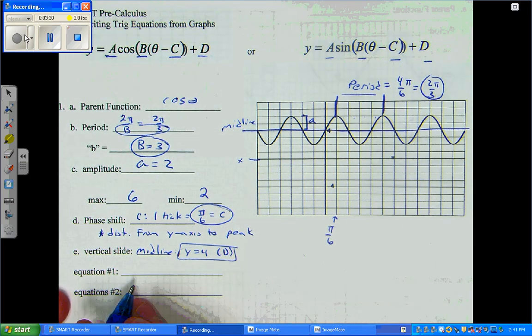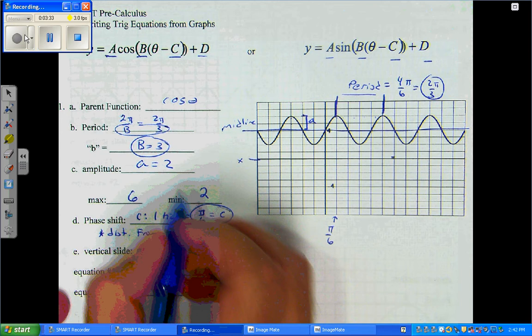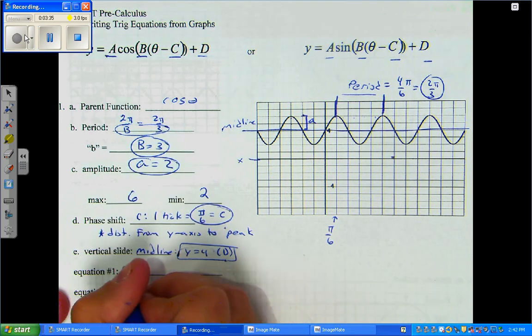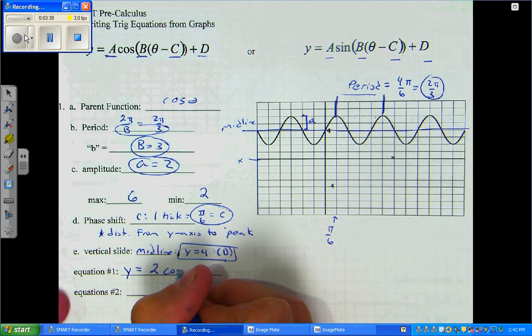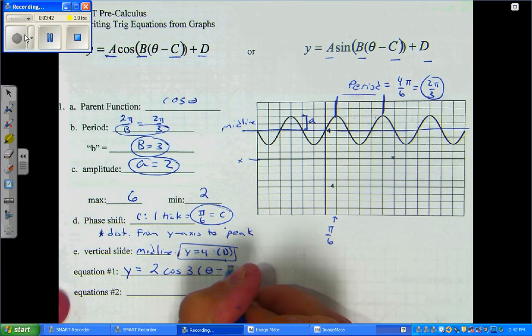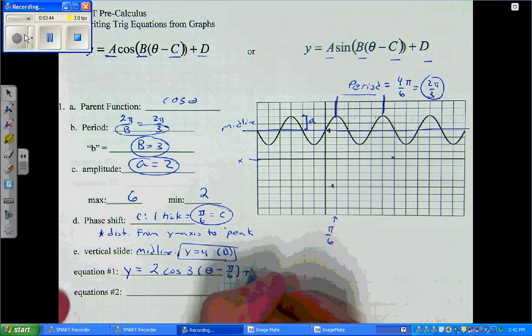Now, we're ready to write our equation. We have d is 4, C is pi over 6, A is 2, B is 3. So, our equation: y equals 2 cosine of 3 theta minus pi over 6 plus 4.